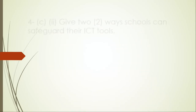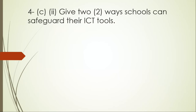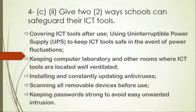Question four C-ii: give two ways schools can safeguard their ICT tools. First, covering ICT tools after use. Second, using an Uninterruptible Power Supply (UPS) to protect tools in the event of power failure or fluctuations. Third, keeping computer laboratories well ventilated and air-conditioned if possible. Fourth, installing and constantly updating antivirus software. Fifth, scanning removable devices before use and keeping passwords strong to avoid unwanted intrusion.